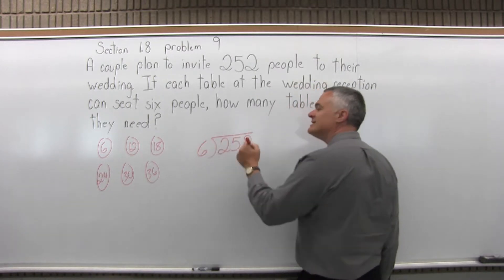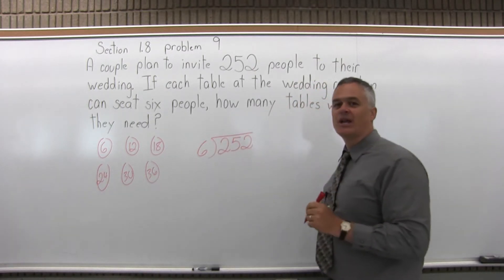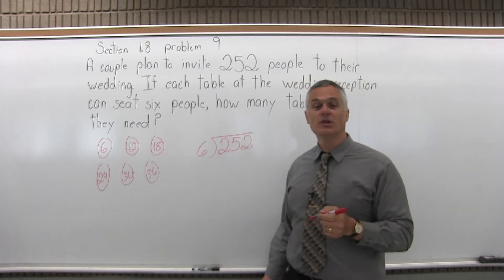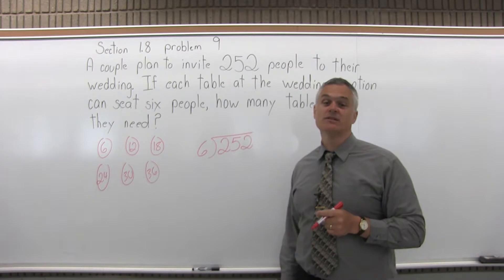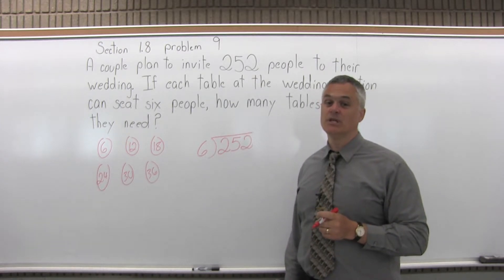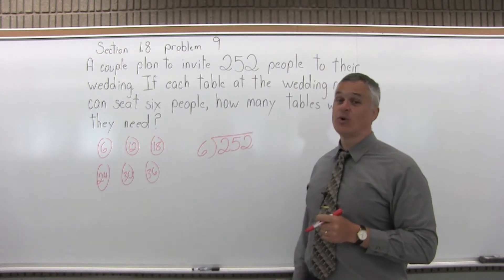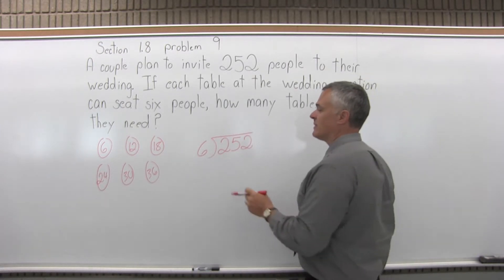A better approach is to say there's 252 people altogether that need to be seated. Let's divide 6 into that number — 6 people per table — and that'll tell us how many tables we need. That will also work, and it'll work a whole lot faster.